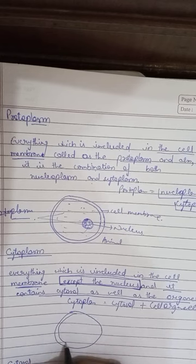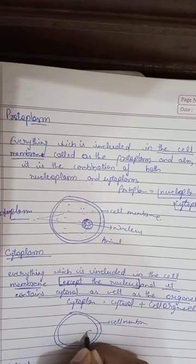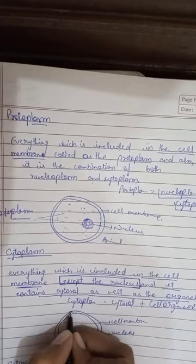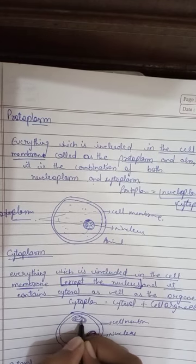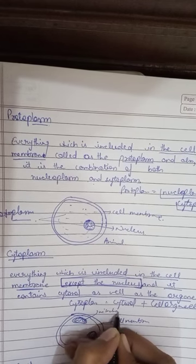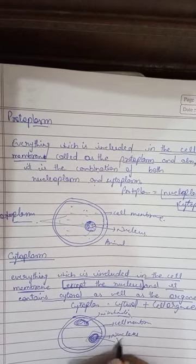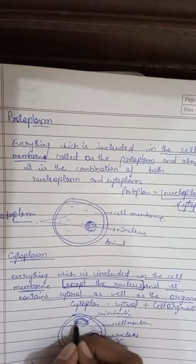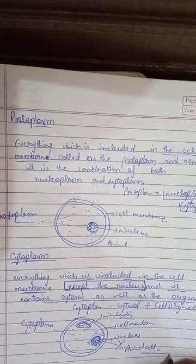Now here is the diagram. This is the cell membrane, and this is the nucleus. We can see the cell membrane and mitochondria as organelles. Everything except the nucleus — all the parts within the cell membrane — we call cytoplasm.